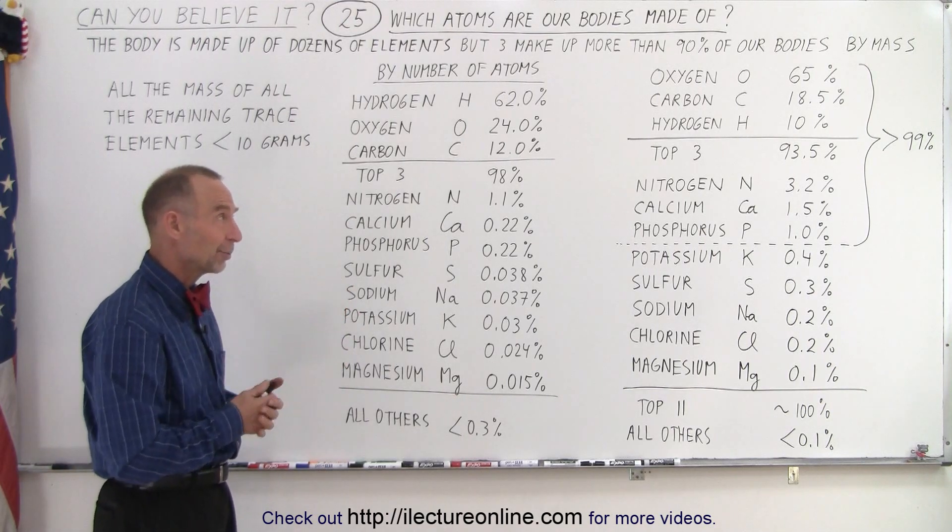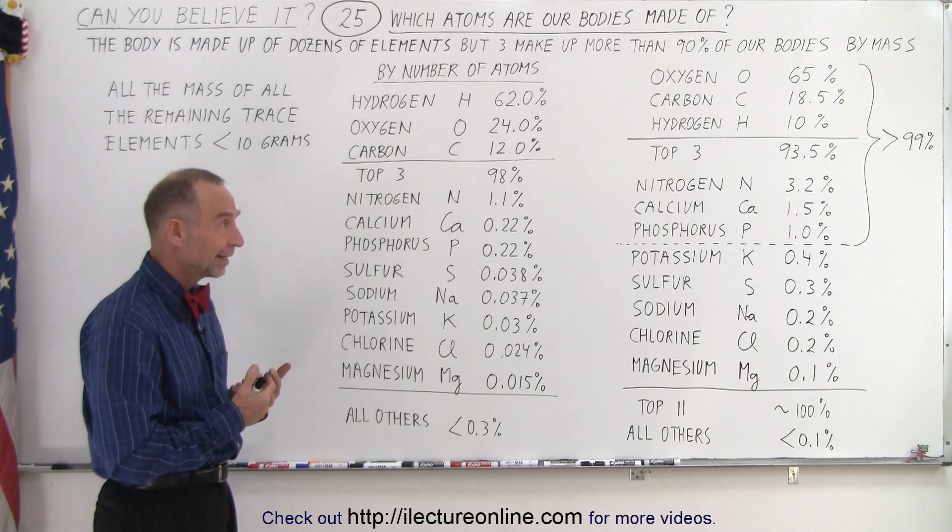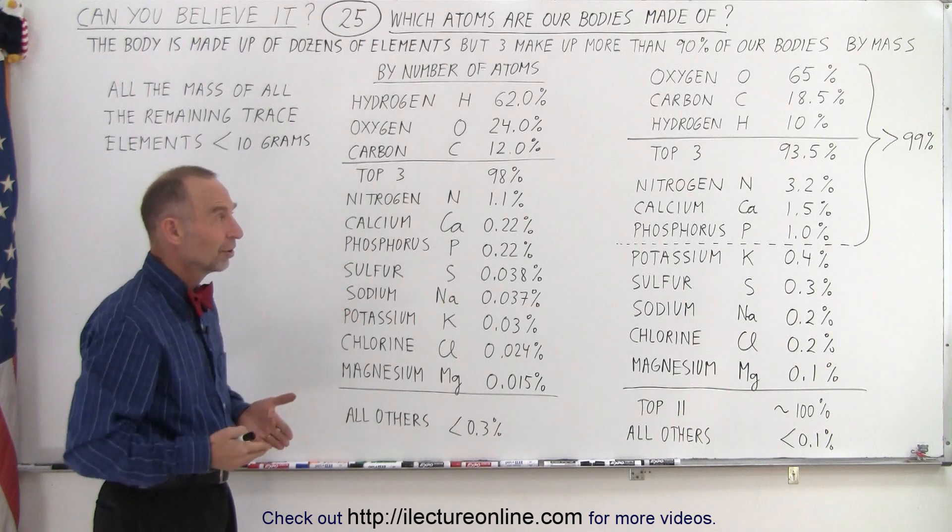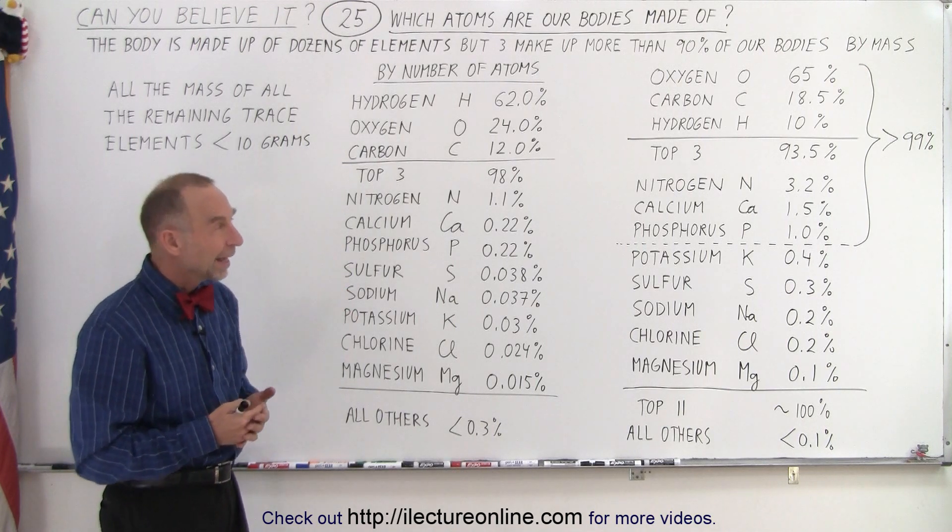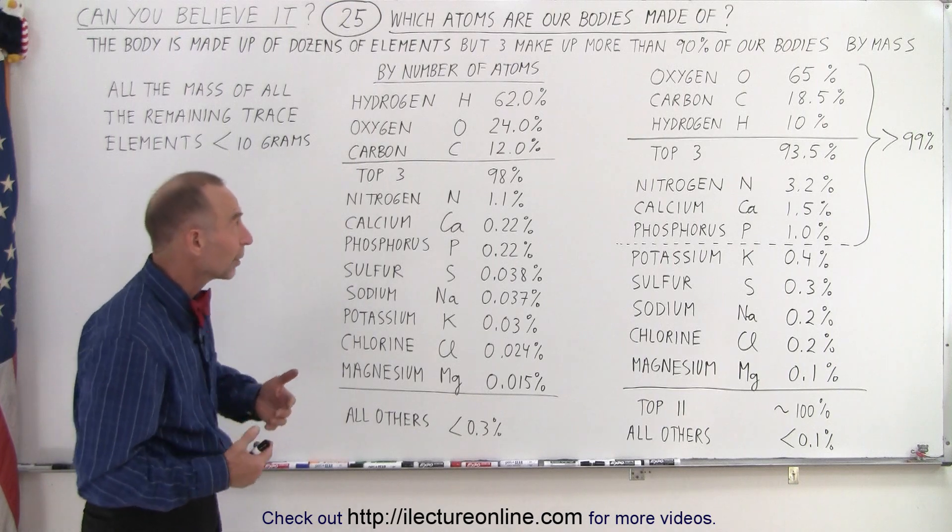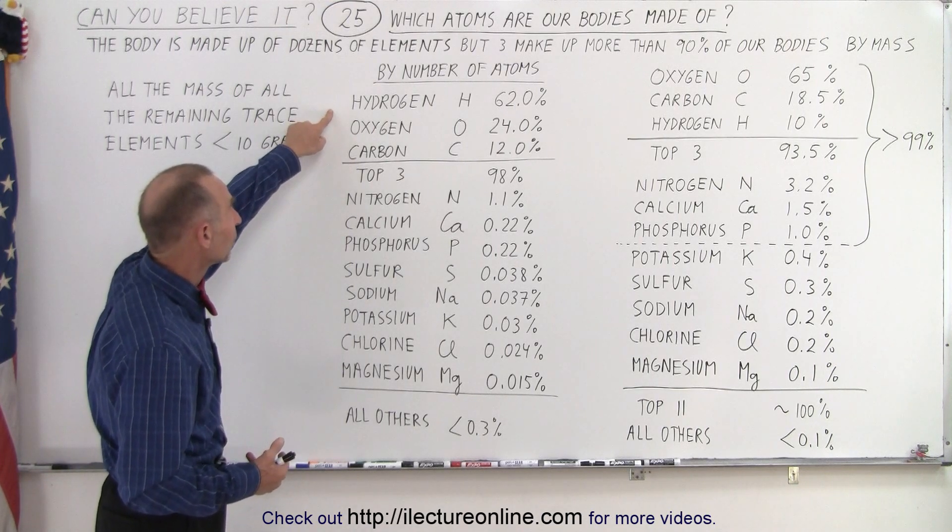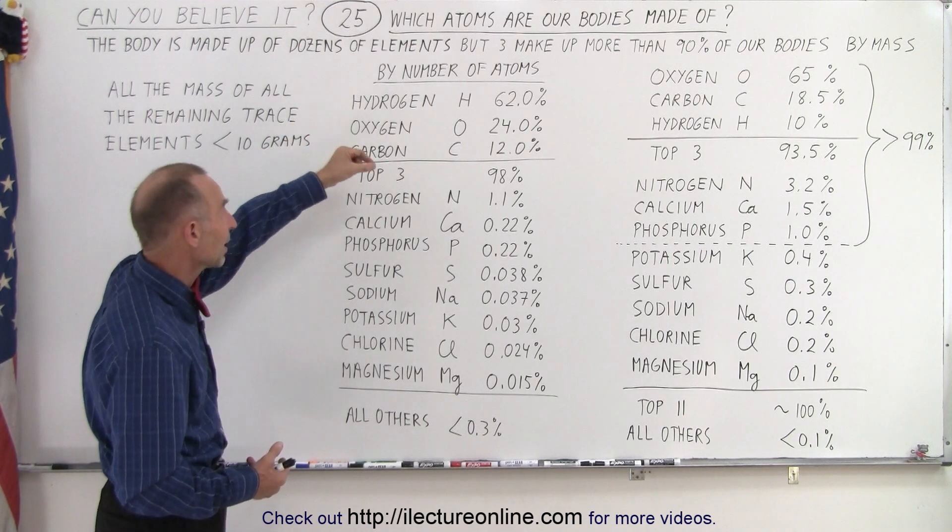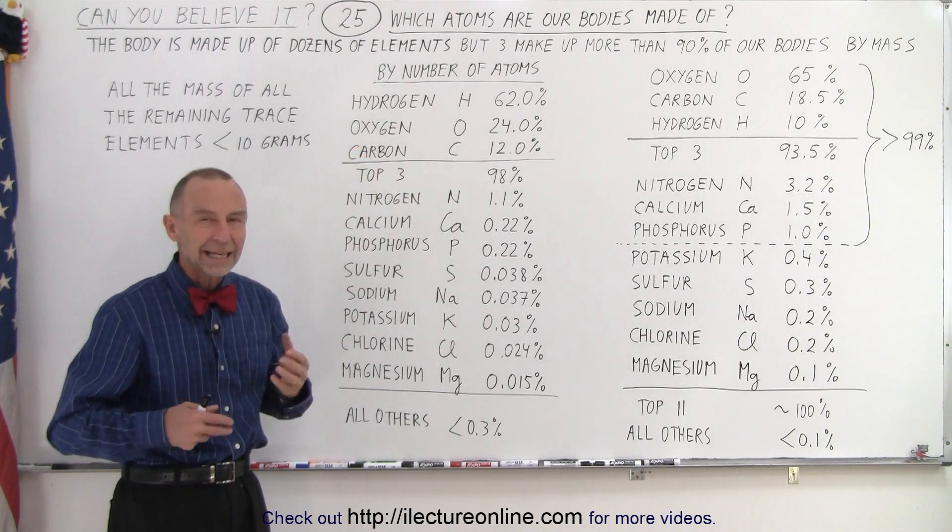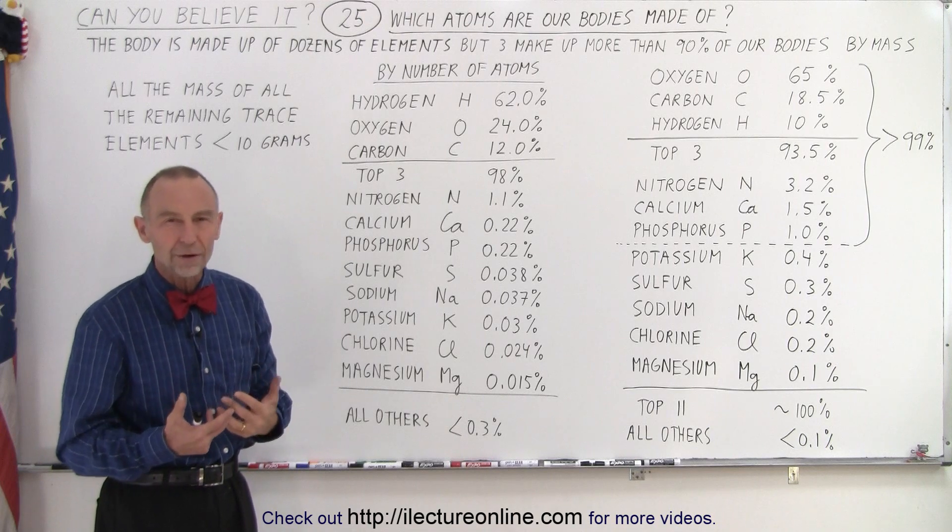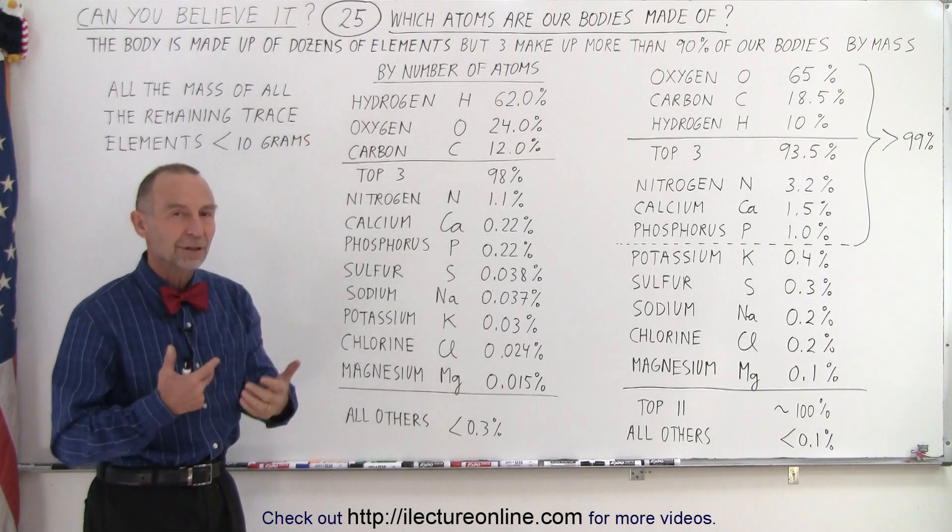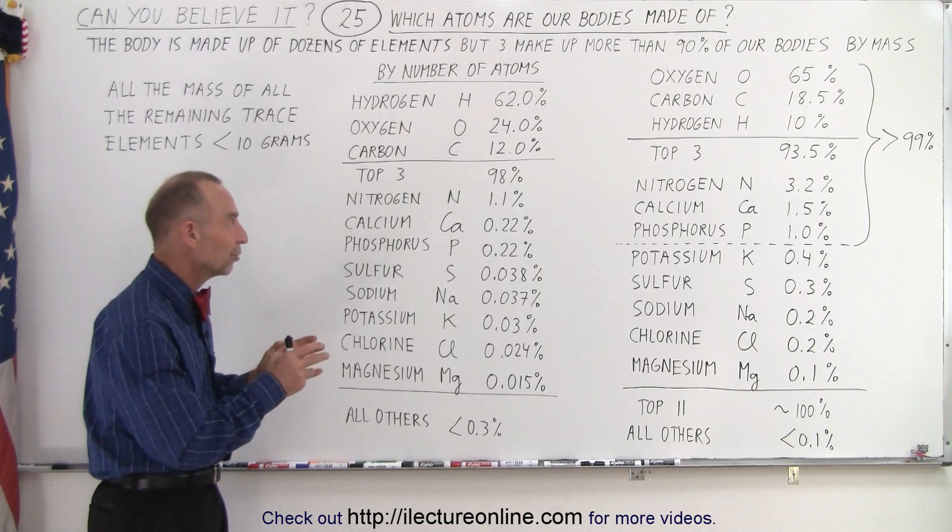But I was actually surprised when I saw these numbers to realize that more than 90% of our bodies are made up of just three elements. And then a lot of times you'll hear that our bodies are mostly made out of water. When you take the top two by number, notice hydrogen and oxygen combined makes water. And yes, a lot of the content of our body is in the form of fluid and some water is there, but obviously they're also taken up in many other types of compounds so that they're not necessarily just water.